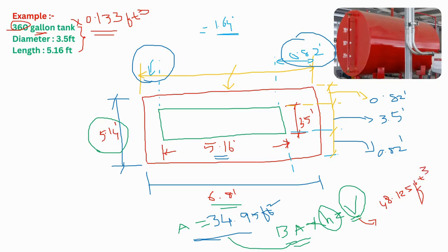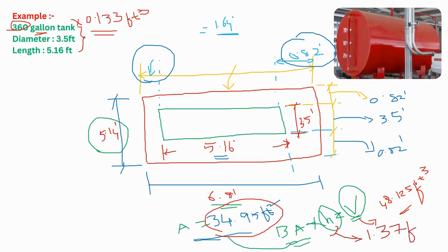Now we know the area and we know the volume, so it is easy to calculate the height. If you divide volume by area — 48.125 divided by 34.95 — we are going to get the height of the bund wall, which is about 1.37 feet.